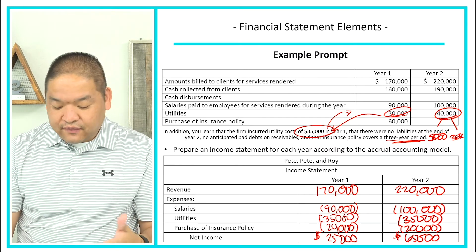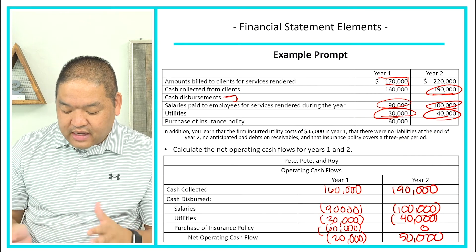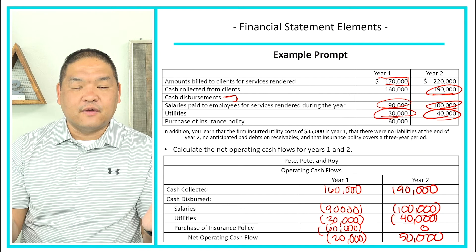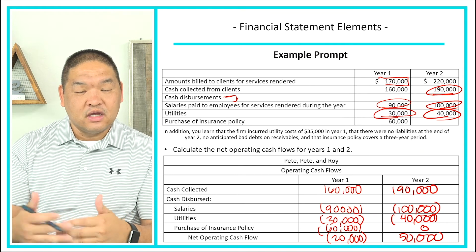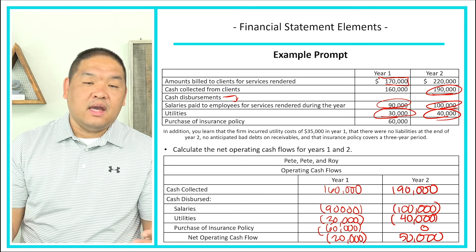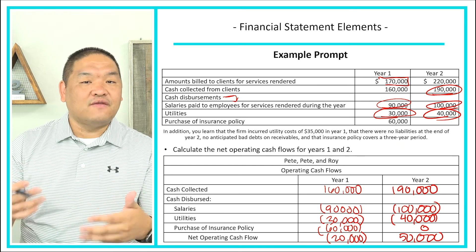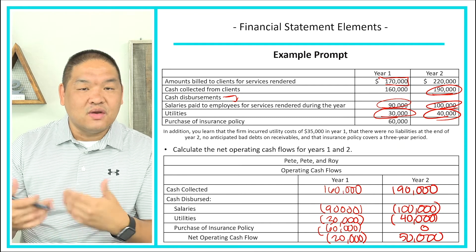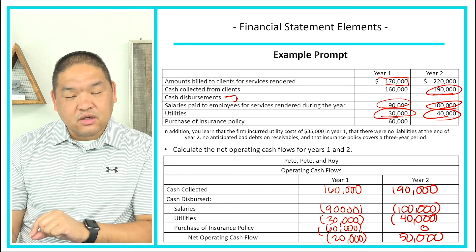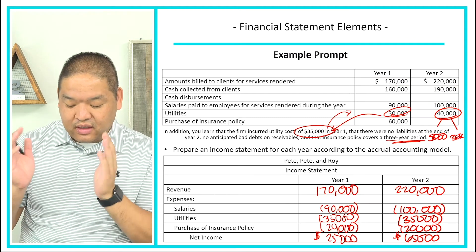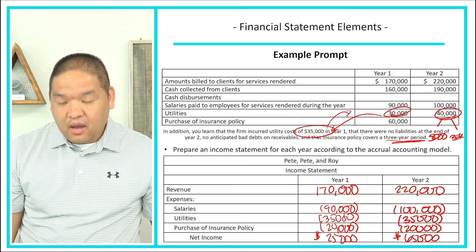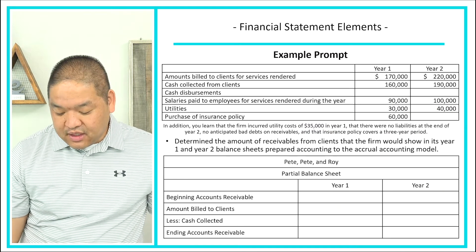As you can see, under the cash basis we went from negative to positive mainly due to the timing of cash flows — especially prepaying three years of insurance and not fully paying utilities in year one. Under the accrual method, we actually had a positive net income in year one as well, which paints a much more accurate picture of the firm's financial performance.